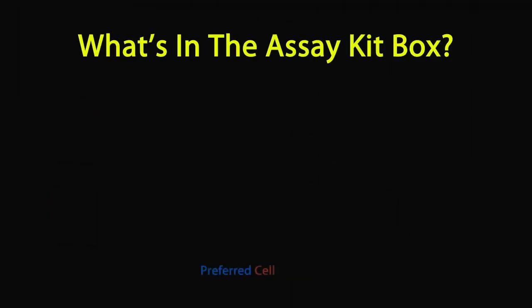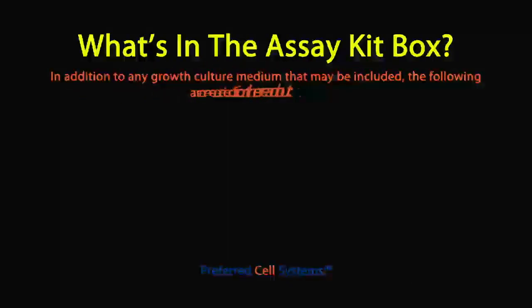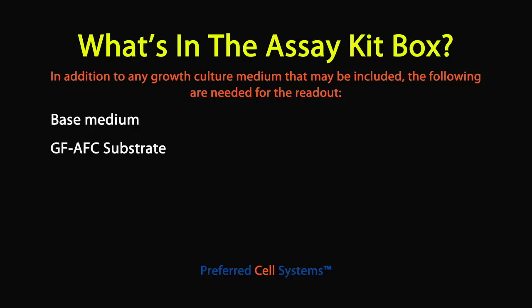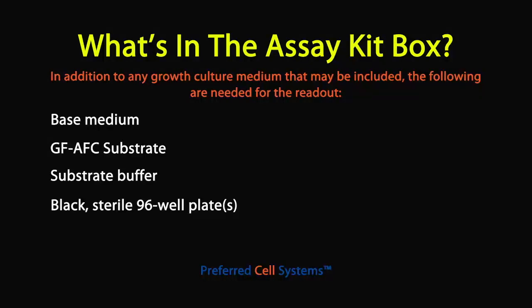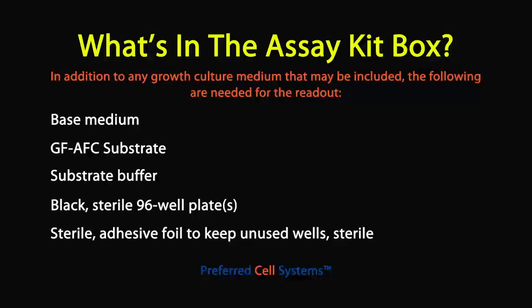When you open the assay kit box, you'll see that it contains nearly everything you need to culture the cells and measure the fluorescence. Some assay kits can be used on numerous cell types; in these cases, investigators should use their own culture materials and protocols. In general, the assay kit contains a base medium, the GF-AFC substrate, substrate buffer, black sterile 96-well plates, and sterile adhesive foils that can keep unused wells sterile.